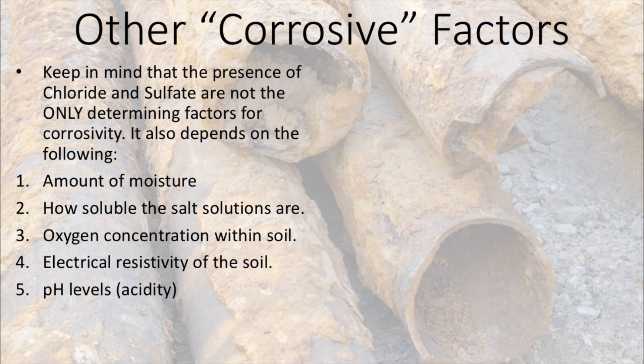Keep in mind there may be other recommendations in your soils report for materials affected by corrosive soils — those were just a few examples. Also note that chloride and sulfate are not the only determining factors for corrosivity. It also depends on the amount of moisture, how soluble the salt solutions are, oxygen concentration within the soil, electrical resistivity of the soil, and the pH levels, which measure the acidity of the soil.